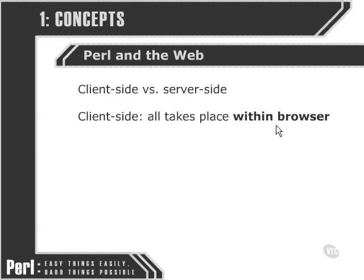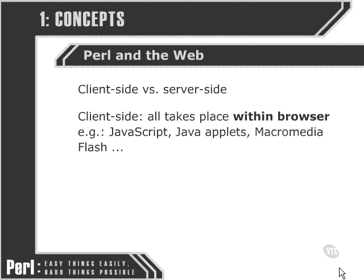Client-side technologies typically take place within the browser, so everything that they do happens on the user's machine. Some examples of client-side technologies would be JavaScript, Java Applets, and Macromedia Flash. These are all very different technologies that do different things, but the common thread between each of them is that they all do things on the user's computer and within their browser.